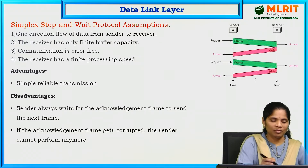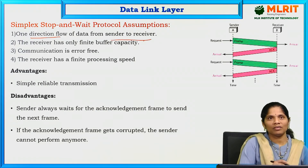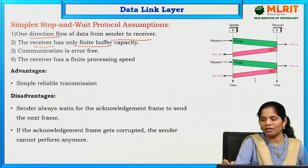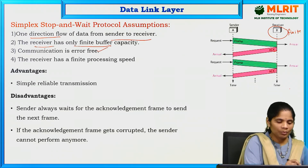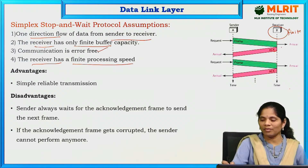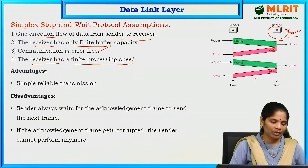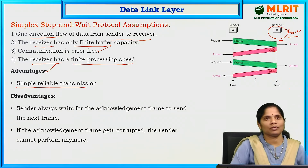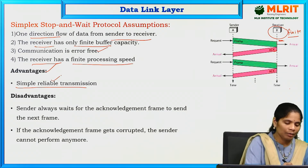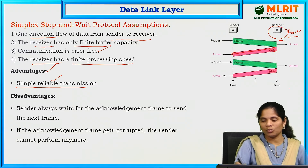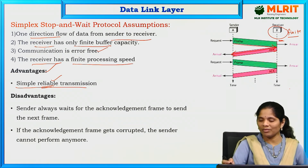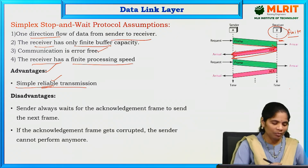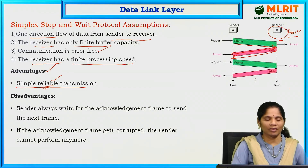The assumptions of simplex stop-and-wait protocol are: data flows only one direction from sender to receiver; the receiver has only a finite buffer — no infinite buffer; communication is error free; and the receiver has finite processing speed. The main advantage is simple, reliable transmission. Previously it was unreliable, but here it is reliable because the receiver sends acknowledgement to the sender — confirming frame 1 is received — so reliable communication is happening between sender and receiver.